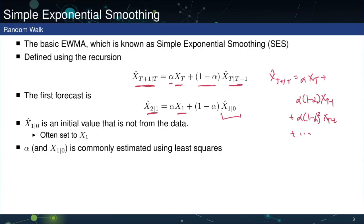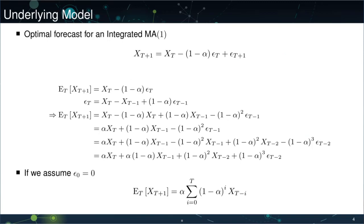Parameters in this model are estimated using least squares. This is not an ordinary least squares model — it has latent values, so it's not possible to use OLS. However, it's something we can use nonlinear least squares to estimate, and this is standard in any decent statistical software package.